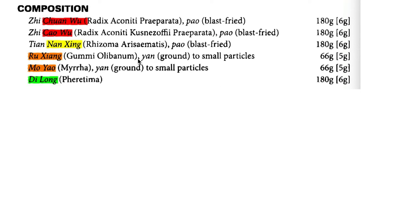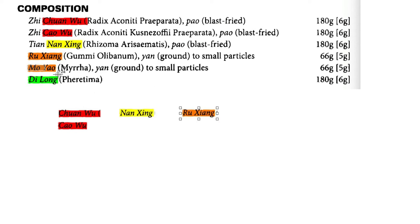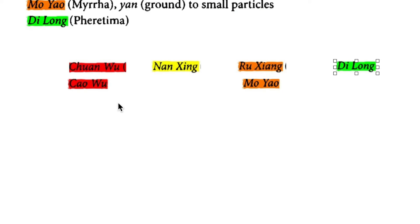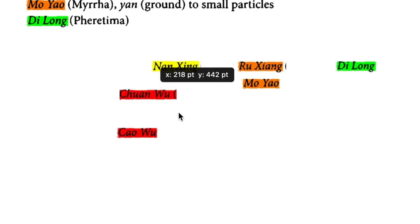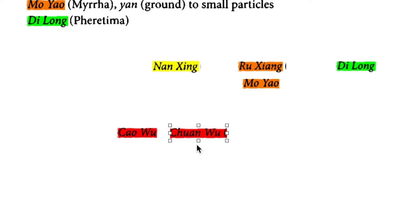We can understand this formula in four different categories. The warming part — Jia Wu or Chuan Wu — is the main leading part. By warming, we can open the channel, because coldness and phlegm create blockage, and blockage causes pain. So Jia Wu and Chuan Wu are the leading characters of this formula.